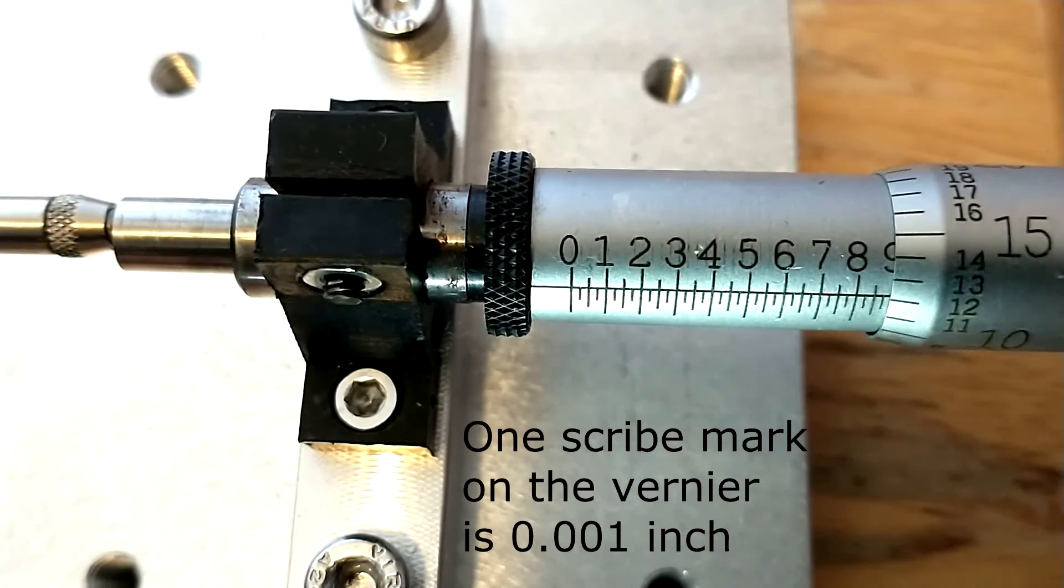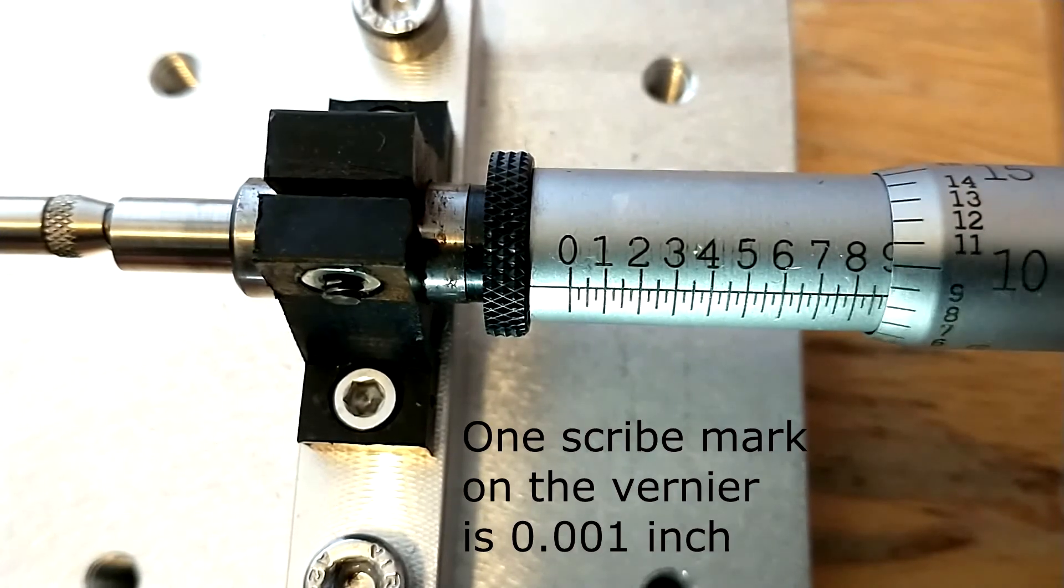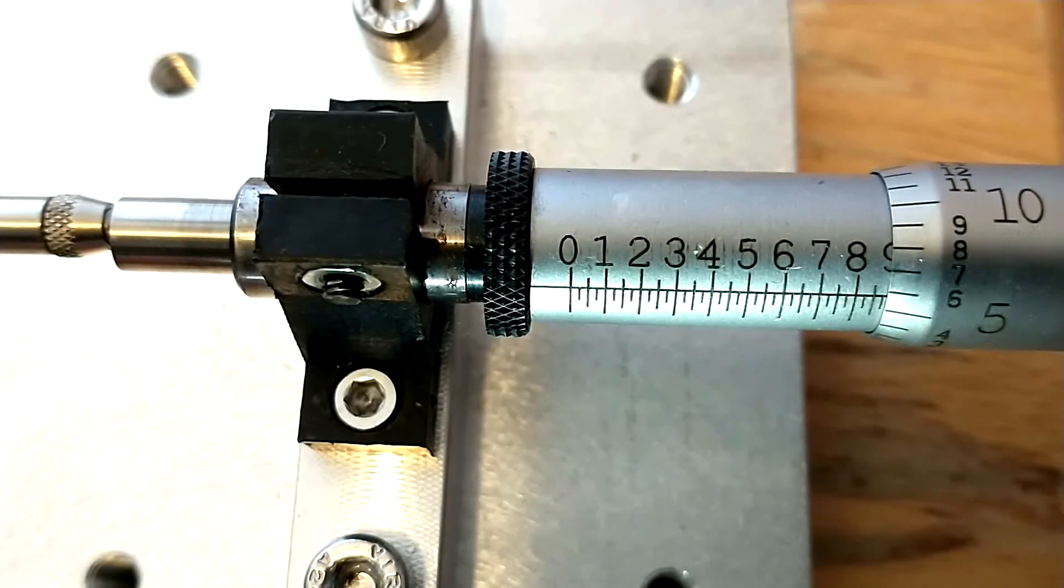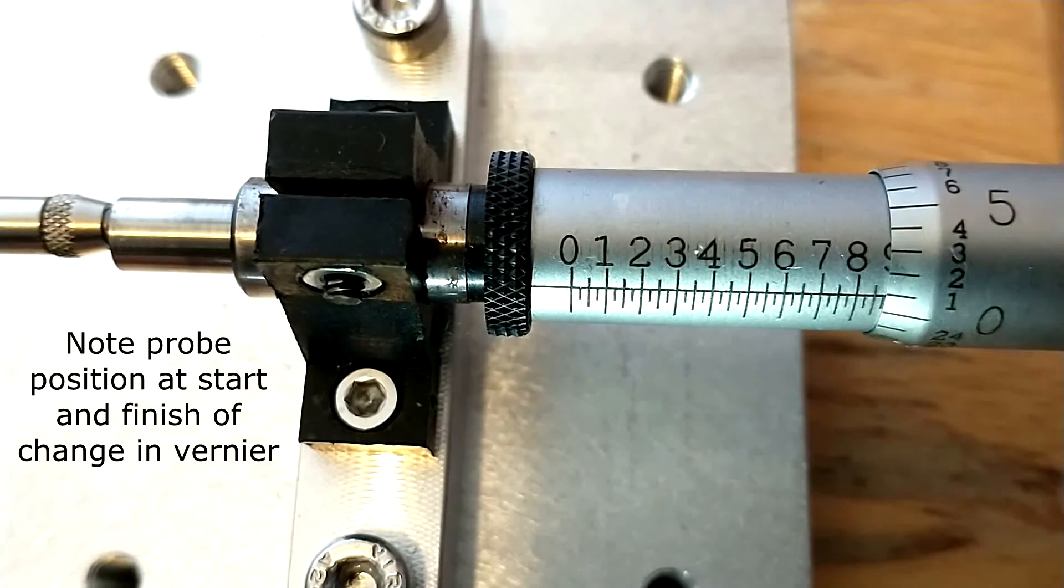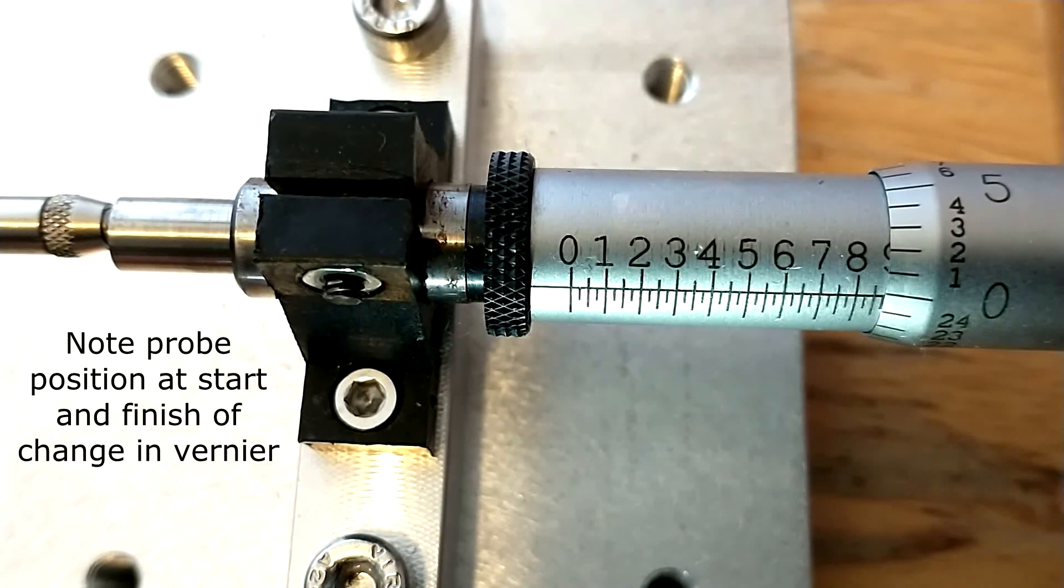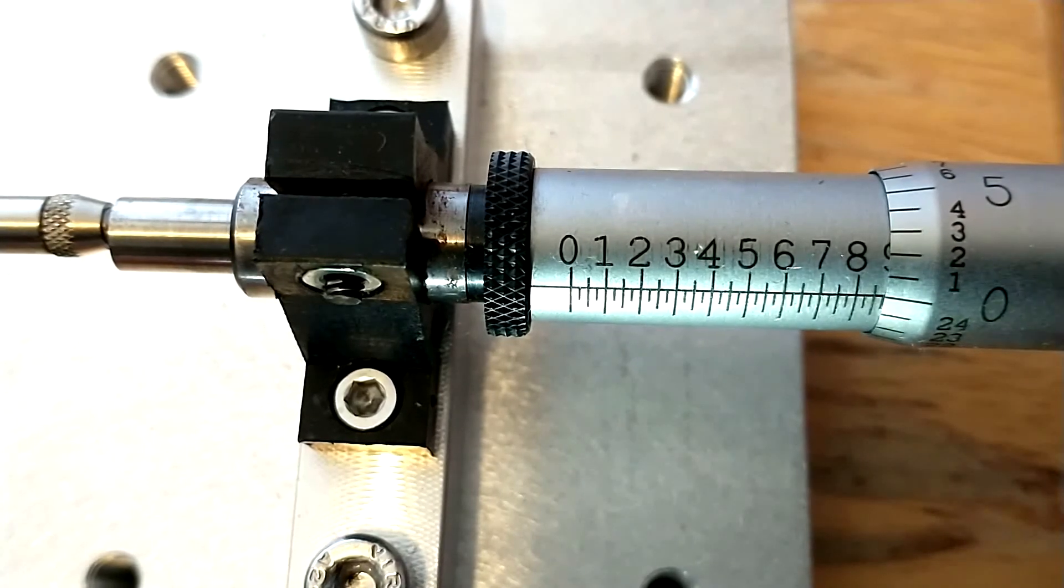I'm going to advance it, and each one of these scribe marks on the vernier represents a thousandth of an inch. I'm going to advance that to that location. I've just advanced 0.025 inch.